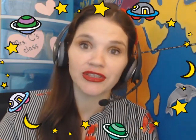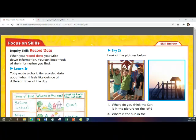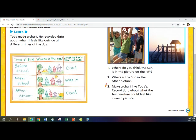So let's look at the information that's shared within the lesson that we should use before we begin. Focus on skills, inquiry skill, record data. That's what we're learning to do in this lesson. When you record data, you write down information. You can keep track of the information you find. So right down here we can see this chart. A chart is a great way to keep track of information. Toby made a chart. He recorded data about what it feels like outside at different times of the day.